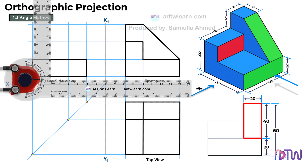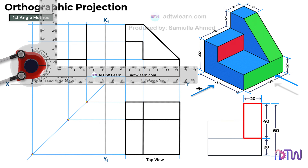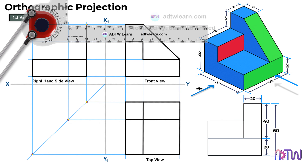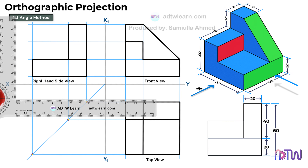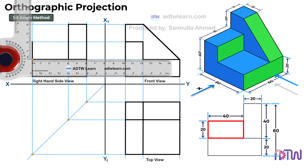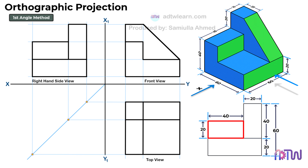Take a drafter and draw a vertical line of 40 millimeters. After this, draw a horizontal line of 20 millimeters from this point and construct a rectangle. In the end, while looking from the right-hand side, we will also see this portion of the object, which has a width of 40 millimeters and a height of 20 millimeters. Take a drafter and draw a vertical line of 20 millimeters from this point, and draw a horizontal line of 40 millimeters up to this vertical line. This is the final right-hand side view of the object.